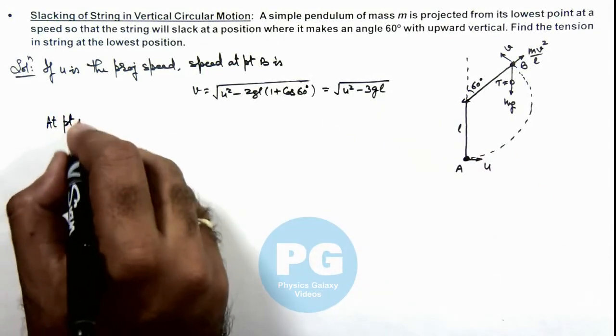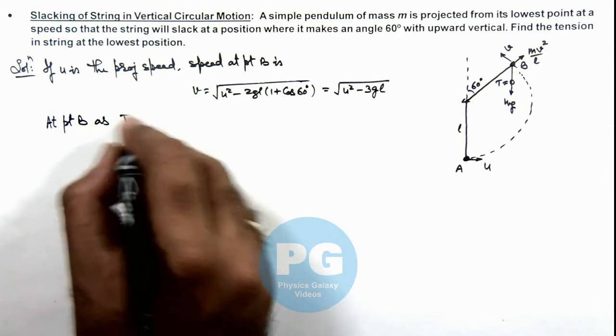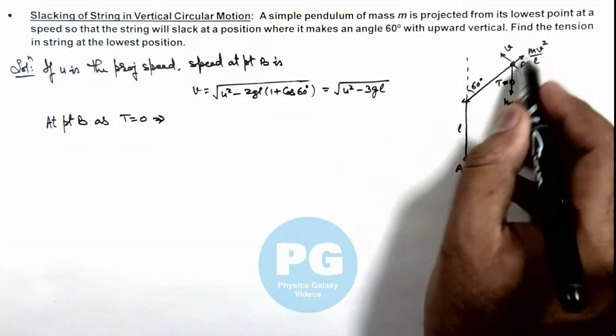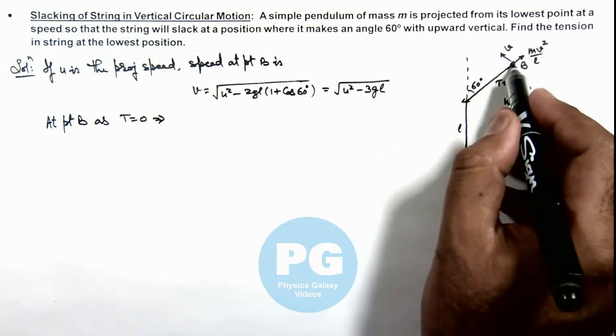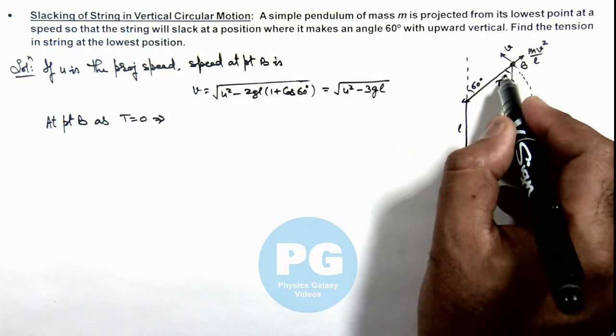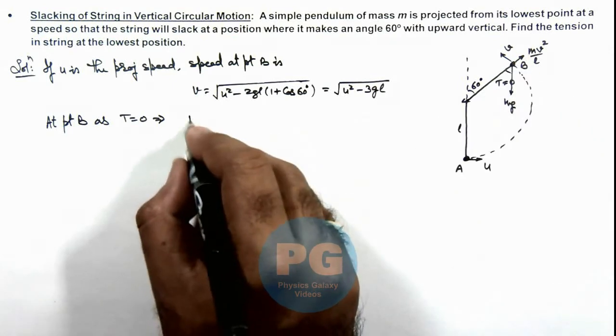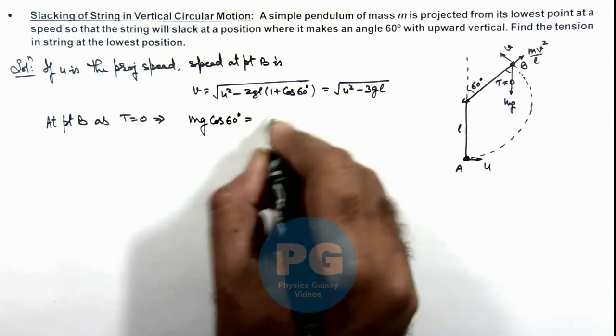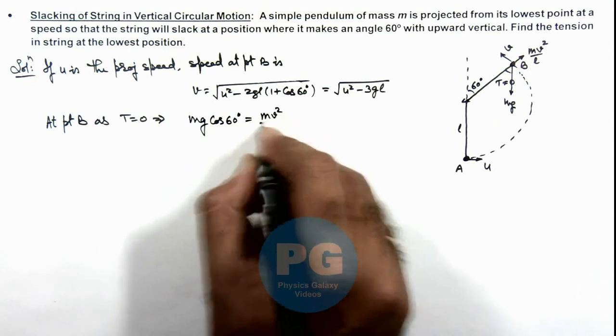As T is equal to zero, this implies at this point, along radial direction, for the equilibrium of bob just before reaching point B, here we can see if this is 60 degrees, we can write mg cos 60 degrees should be equal to mv² by l.